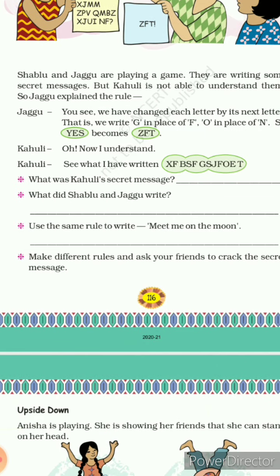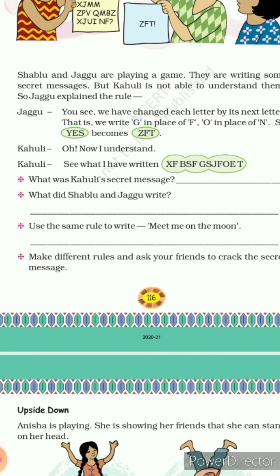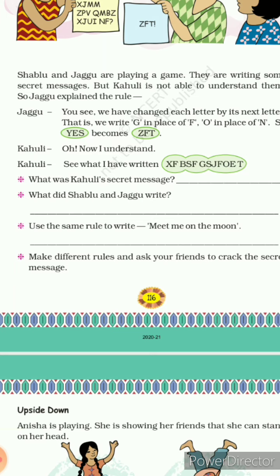Next is: use the same rule to write 'meet me on the moon.' So aap is message ko isi rule se likhenge. M ke baad aapka aata hai N, E ke baad F — so double F — and T ke baad U. So aapka 'meet' ka ho gaya hai N F F U.